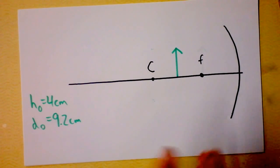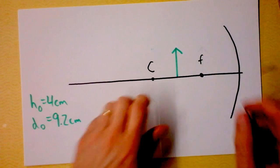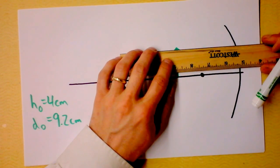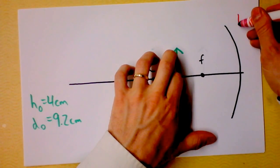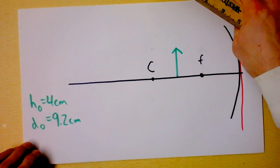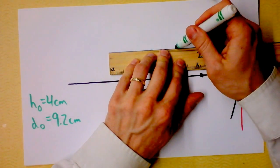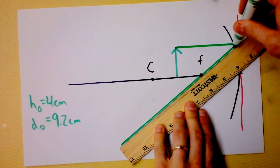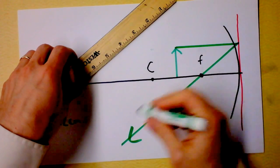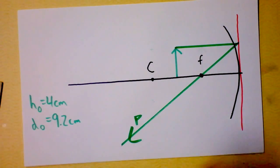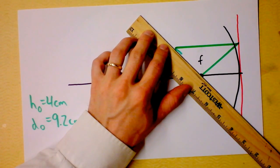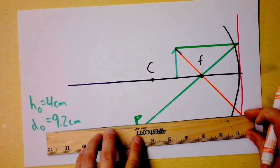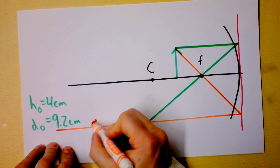Next, they've put the object in between the center of curvature and the focal point. We need a P ray. The P ray comes in parallel and goes out through the focus. Then we get an F ray: it comes through the focus and goes out parallel. Notice there's a lot of room for error here — if I'm just slightly off, everything's going to be crazy. But there is my F ray.